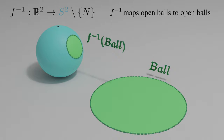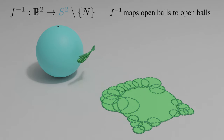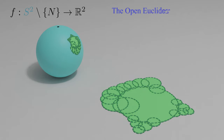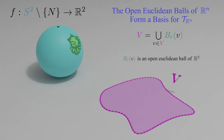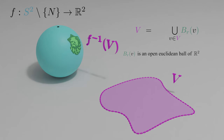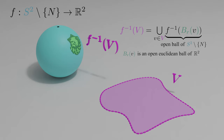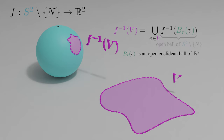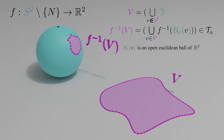Since f inverse maps open balls to open balls, it also maps collections of open balls in the plane to collections of open balls on the punctured sphere. The open Euclidean balls in the plane are basis elements for the plane's standard topology, so we can set some open subset V in the plane equal to a union of these open Euclidean balls. Since V is open it's an element of tau_B, and the preimage of V equals the preimage of the union of these balls. Bringing f inverse inside the union, and using the fact that topologies have closure under arbitrary unions, the union of all open balls of the punctured sphere is an element of tau_A. We've now shown that an arbitrary V in tau_B has an open preimage in tau_A, so f is continuous.